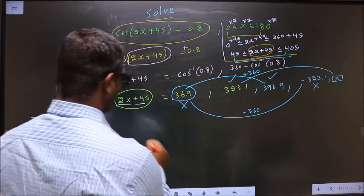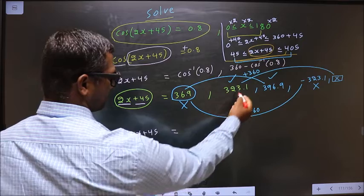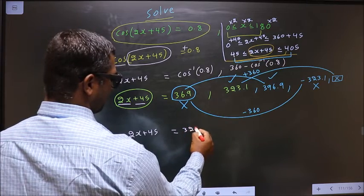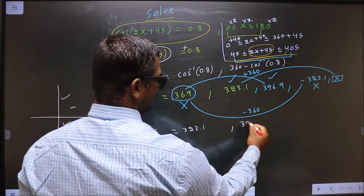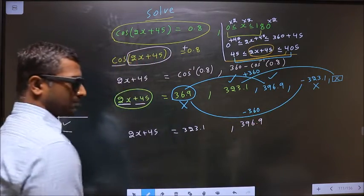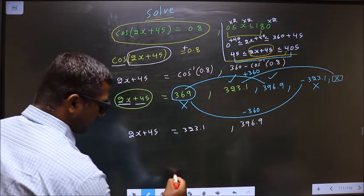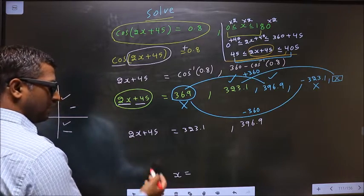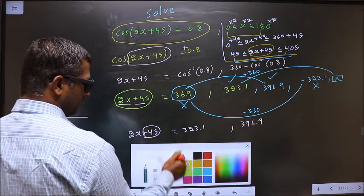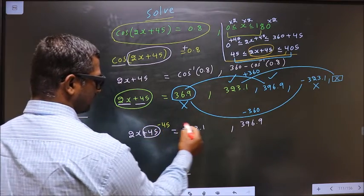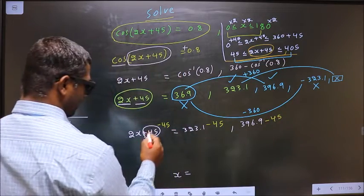So we got values for 2x + 45: 323.1 and 396.9. Now we should get the values for x. For that, first I should remove 45. For that you subtract 45, so we get 2x = 323.1 - 45, 396.9 - 45.